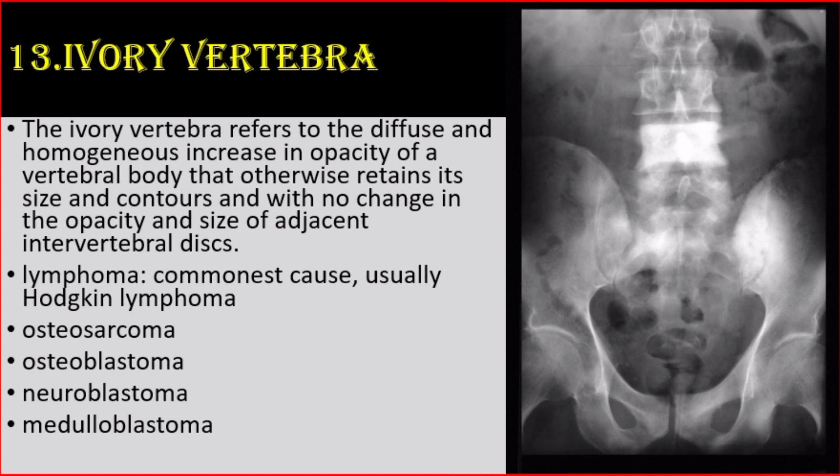Number 13: Ivory vertebra. The ivory vertebra refers to the diffuse and homogenous increase in opacity of a vertebral body that otherwise retains its size and contours, with no change in the opacity and size of adjacent intervertebral discs. It can be seen in lymphoma — most commonly Hodgkin lymphoma — and also in osteosarcoma, osteoblastoma, neuroblastoma, and medulloblastoma.